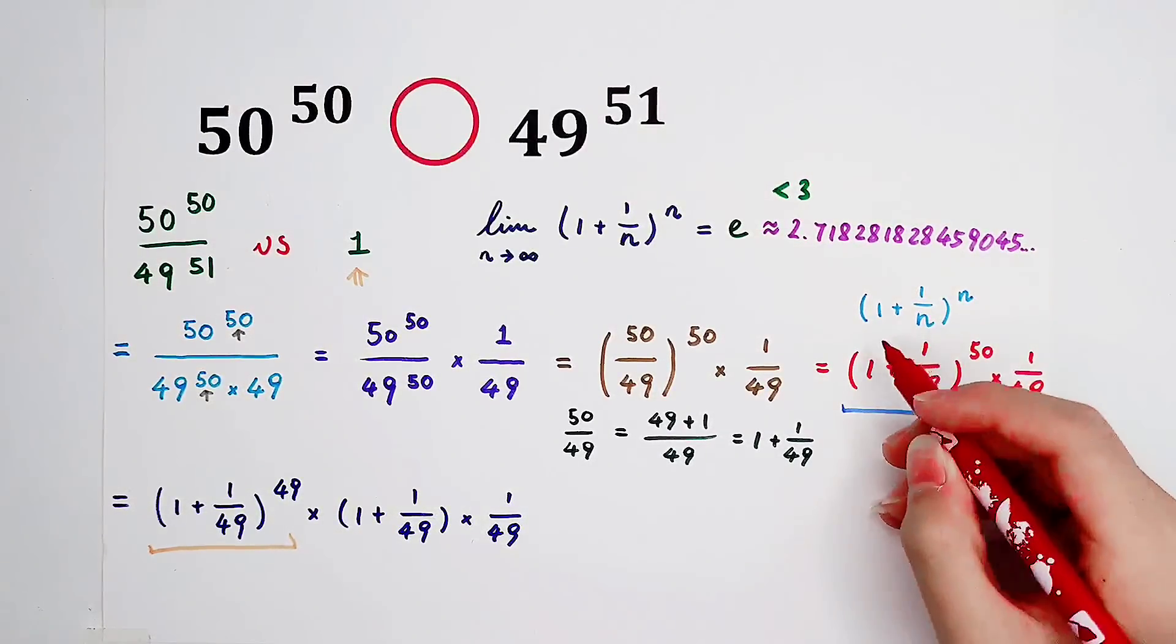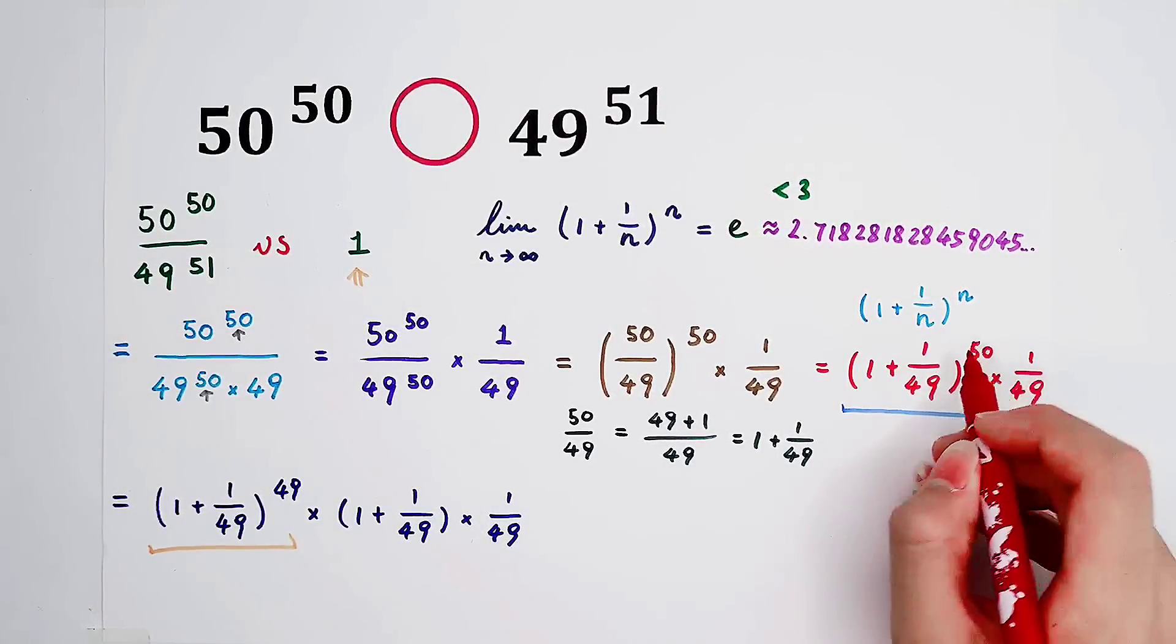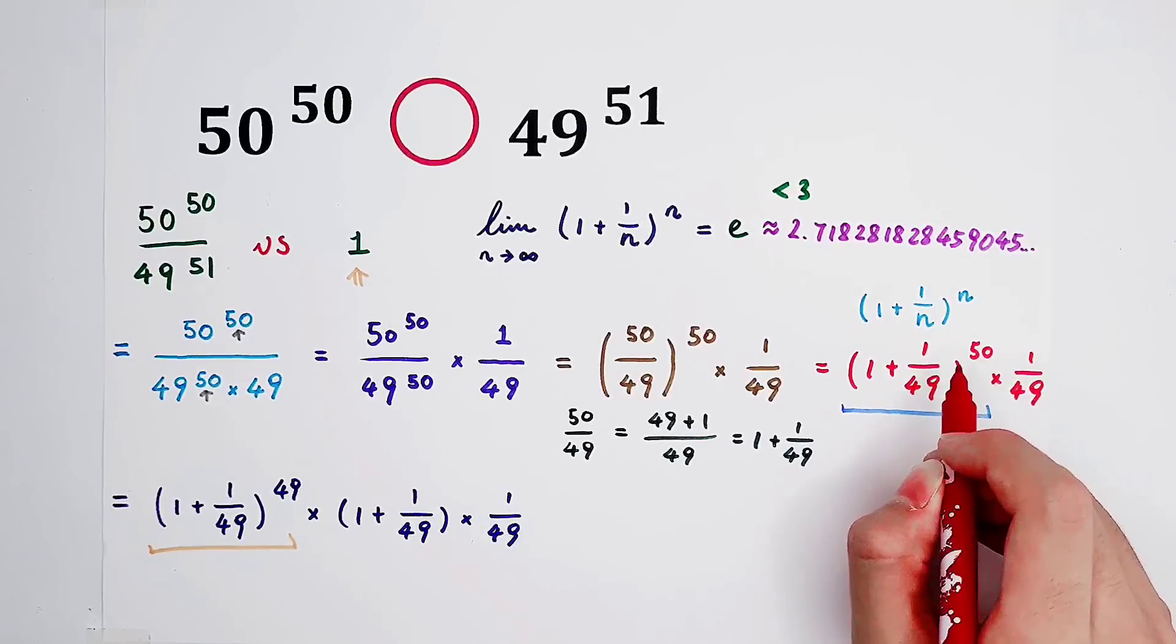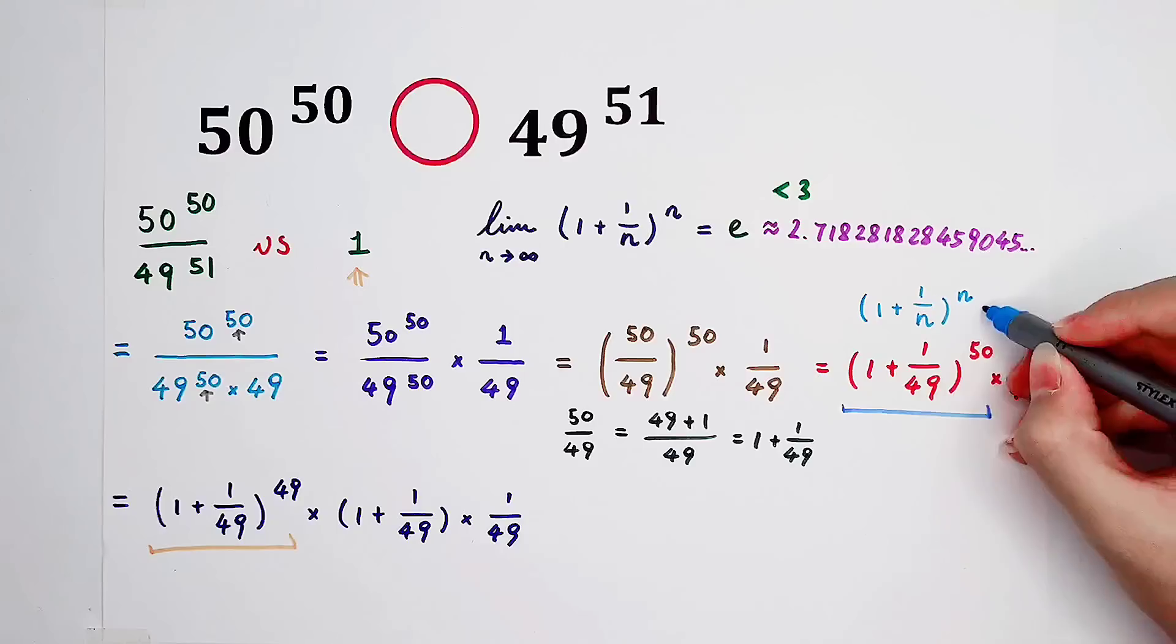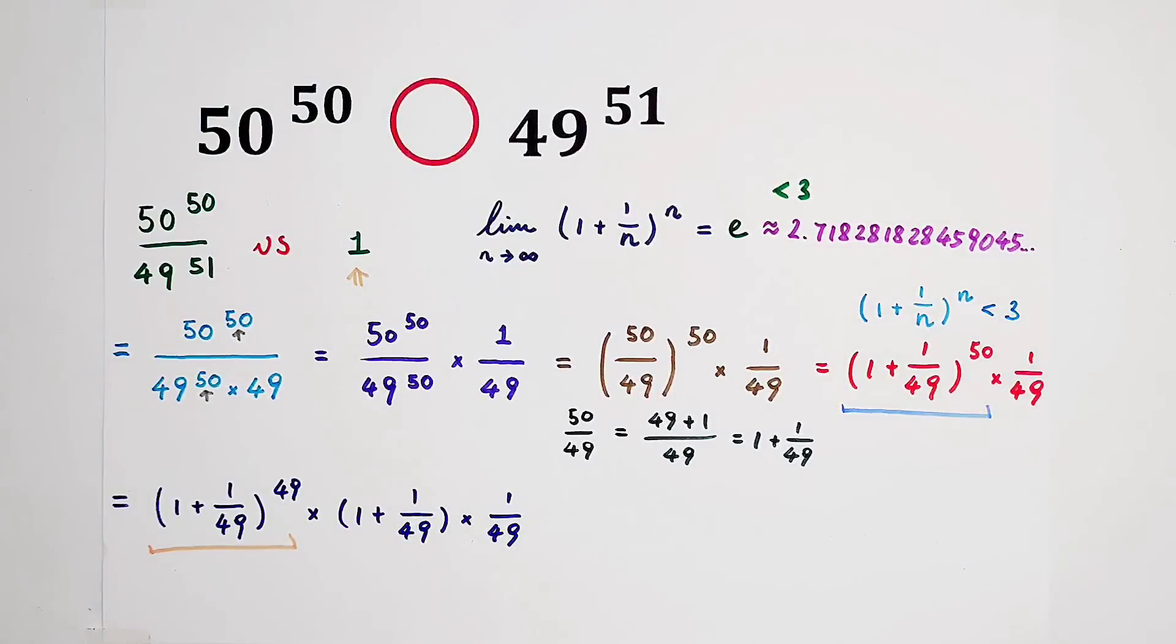Whatever n is, 1 plus 1 over n, all to the power of n, is always smaller than 3. So this part is smaller than 3. So our last step is of course smaller than 3 times...